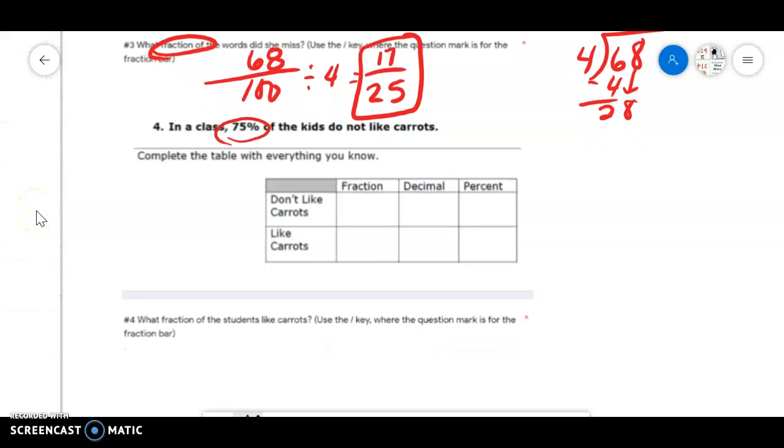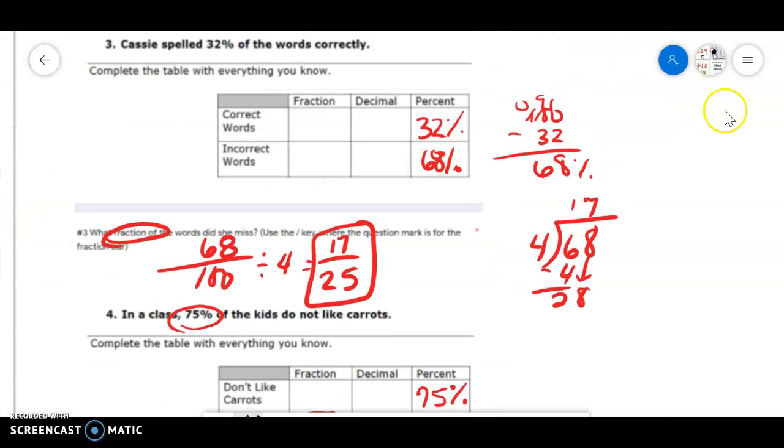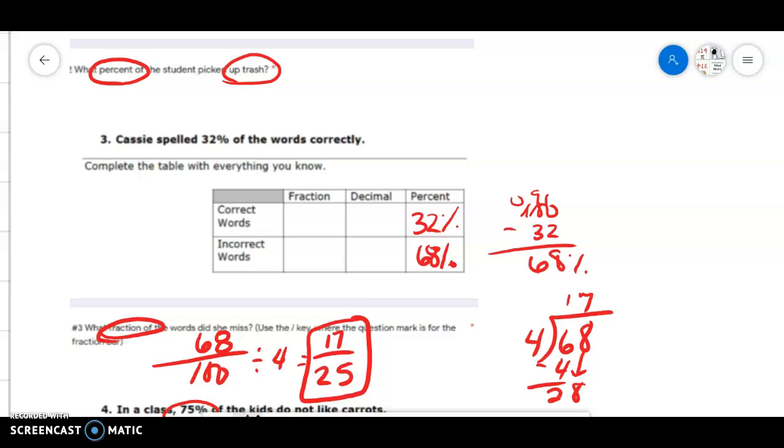And then 75% do not like carrots, so we know that 25% do. And again, I was asking for do like carrots. We know 25% is one-fourth. So that was day one. And again, the biggest issue was that people did not read very carefully.